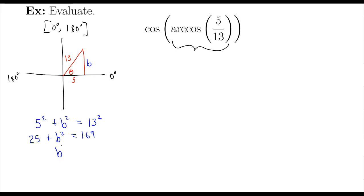If I subtract 25 from both sides, I end up with 144. And then the square root of 144 is 12. Positive and negative 12. We're going to go with positive 12 because we're in the first quadrant here. So positive 12.